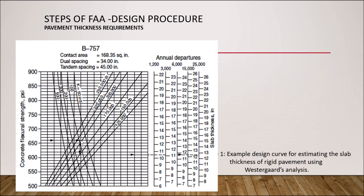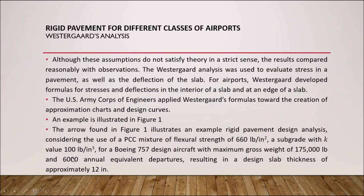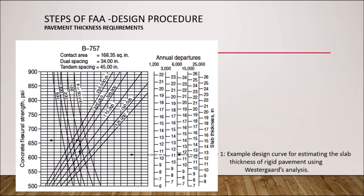Once we touch the k value, we read down to the aircraft weight. For our question we have 175,000 pounds, so we locate 175 and move to the right to connect with the annual departure. The annual departure given is 6,000. Moving along the line to 6,000 annual departures, we can see that the pavement thickness is between 11 and 12 inches, very close to 12, so we approximate it to be 12 inches.